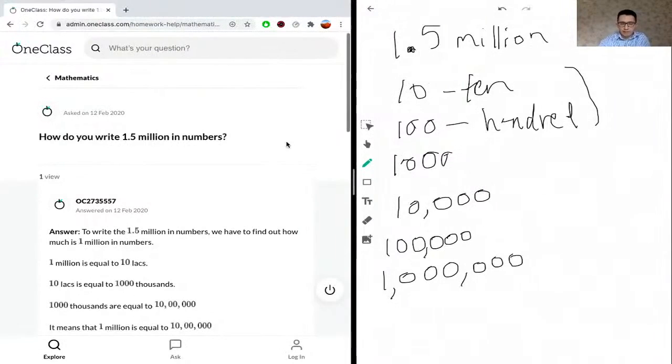If you multiply this by 1.5, we essentially have to move the decimal point. Whenever we're multiplying by 10 or multiples of 10 with many zeros, we count the number of zeros here and then we move the decimal point over by the number of zeros. So here we have six zeros, so we have to move the decimal point over six times.